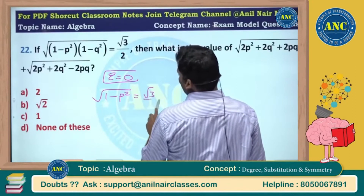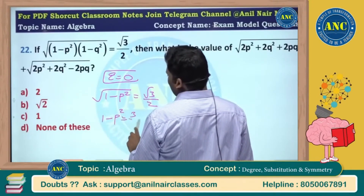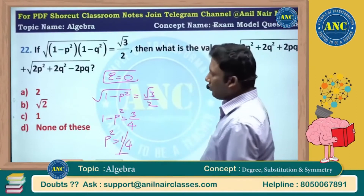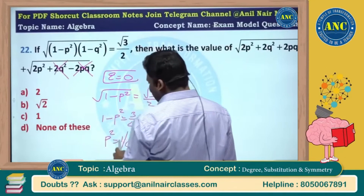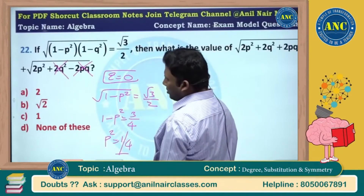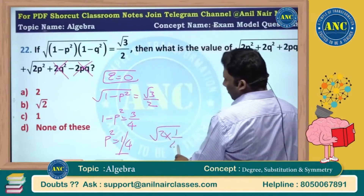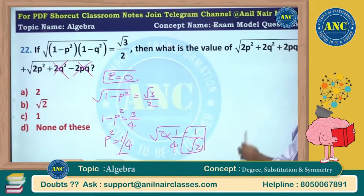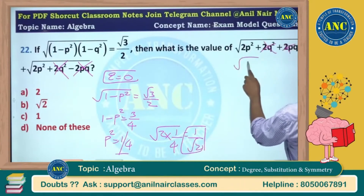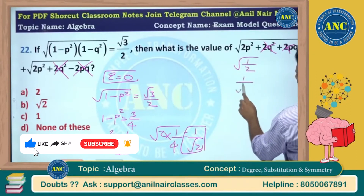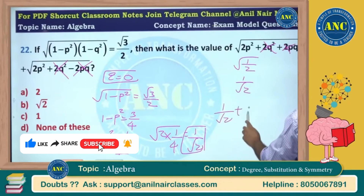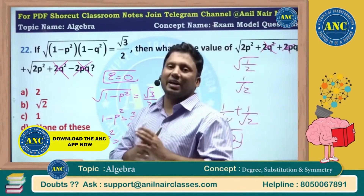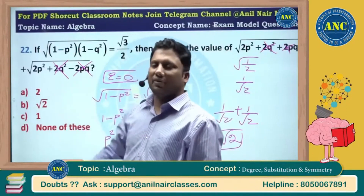If I make q = 0: root(1 - p²) = root(3)/2, so 1 - p² = 3/4, p² = 1/4. With q = 0 removed, we get root(2p²) = root(2 × 1/4) = 1/root(2). Then with q = 0: root(1/2) + root(1/2) = 1/root(2) + 1/root(2) = 2/root(2). The answer is root 2.